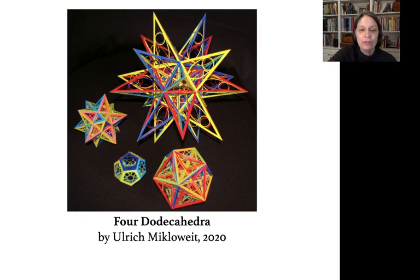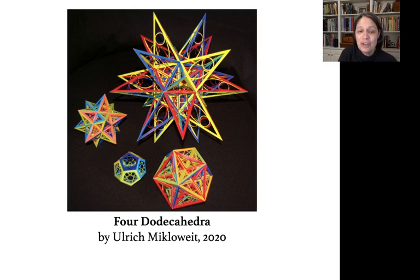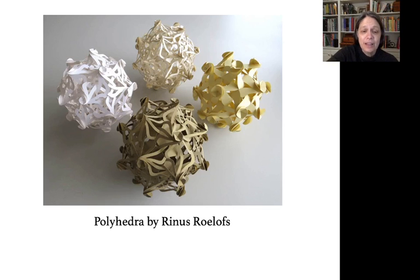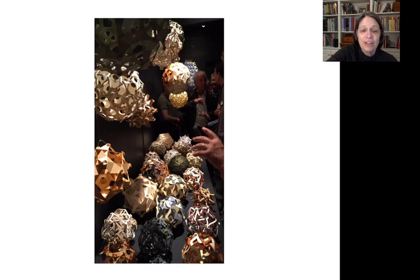These paper sculptures by Ulrich Miklovit show the four stellations of the dodecahedron. Stellations are formed by extending the faces of a polyhedron until they intersect to enclose space. Stellation is used by many mathematical sculptors to create interesting forms. These artists include Renes Roloff, who creates paper sculptures using interlocking pieces and no adhesives. Renes has created paper sculptures based on a great variety of polyhedra.